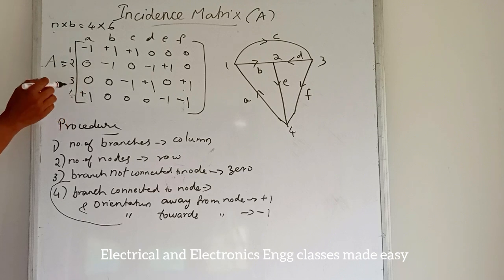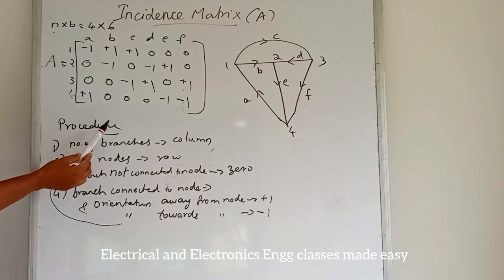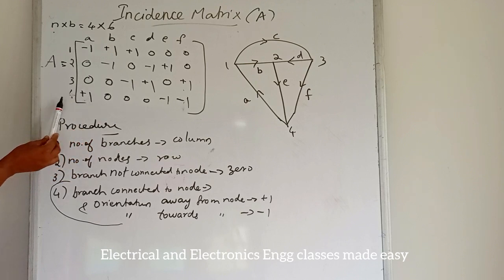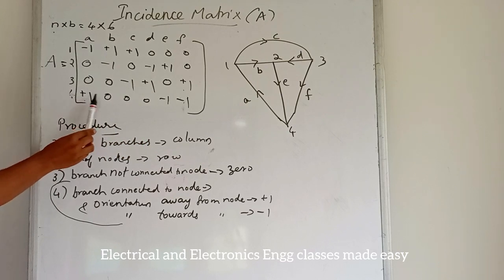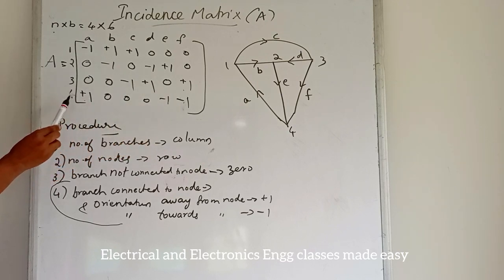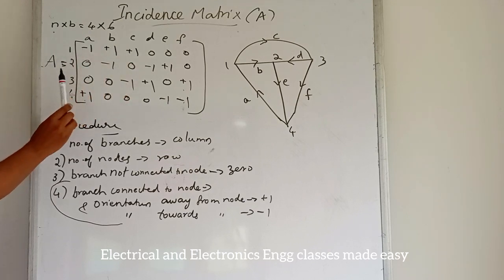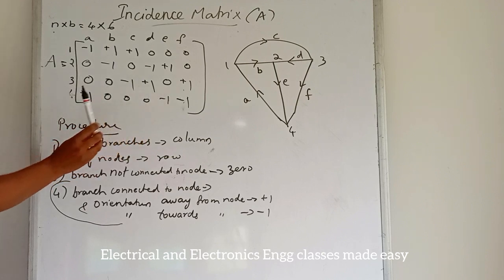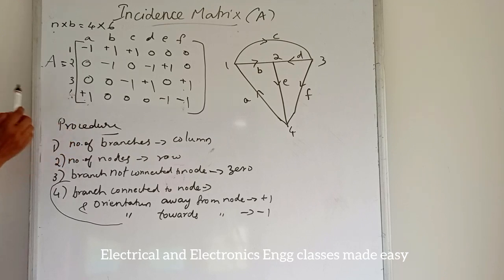The non-zero entries in a row identify the branches incident at a node, and their number is called the degree of the node. For example, while considering node 4, there are 3 non-zero entries, so the degree of node 4 is 3. Similarly, the degree of node 1 is 3. The number of non-zero entries in a row indicates the degree of that corresponding node.